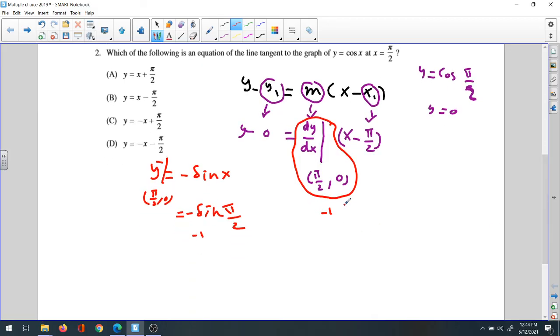So negative 1 times x minus π/2, and here will be y. Distribute negative to be negative x plus π/2.